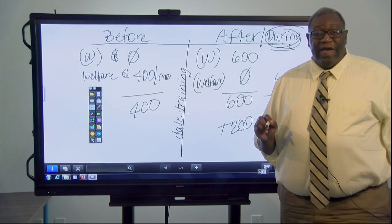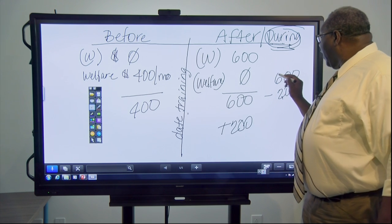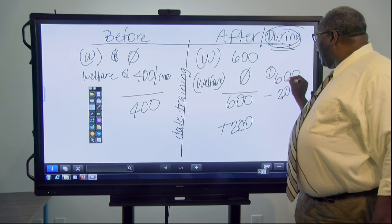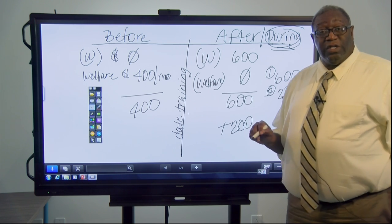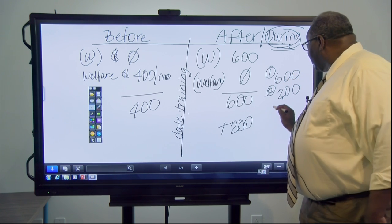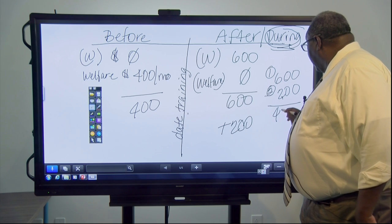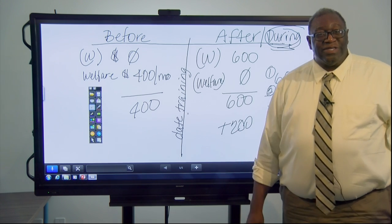So when you're filling out the 50058, you actually count on one line the $600, and then on the second line, you're going to exclude $200. That's going to keep us at $400, so the family does not suffer at all.